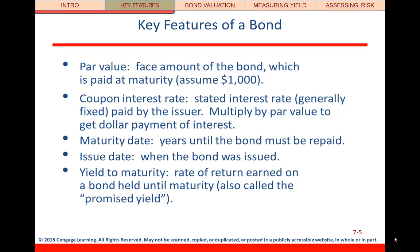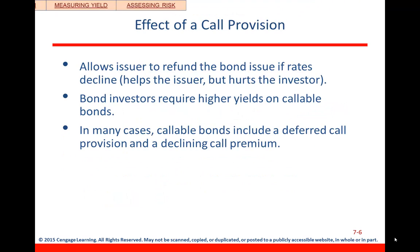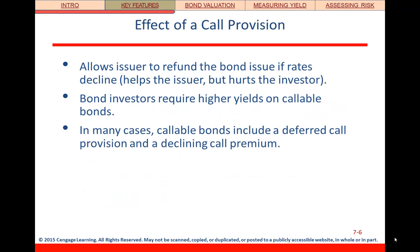Next, there's the maturity date — that is the date when you get the principal or face value back, when the bond has to be repaid. The issue date is simply when the bond was originally issued. And the yield to maturity is the rate of return you would earn on that bond if you held it until it actually matures.